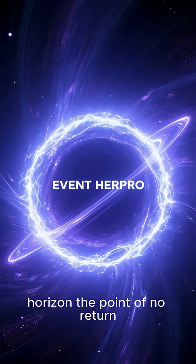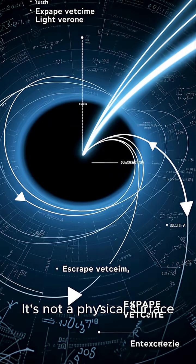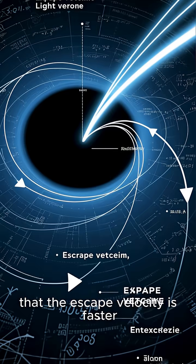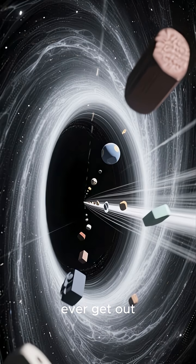This creates the event horizon, the point of no return. It's not a physical surface, but a boundary where gravity is so strong that the escape velocity is faster than the speed of light. Nothing that crosses it can ever get out.